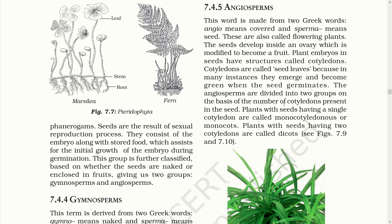Then we have Angiosperms. This word is from two Greek words: Angio means covered and sperma means seed. These are also called flowering plants. The seeds develop inside an ovary, which is modified to become a fruit. Plant embryos in seeds have a structure called Cotyledons. Cotyledons are called seed leaves because in many instances they emerge and become green when the seed germinates. The Angiosperms are divided into two groups based on the number of Cotyledons: plants with a single Cotyledon are called Monocotyledonous or Monocots, and plants with two Cotyledons are called Dicots.